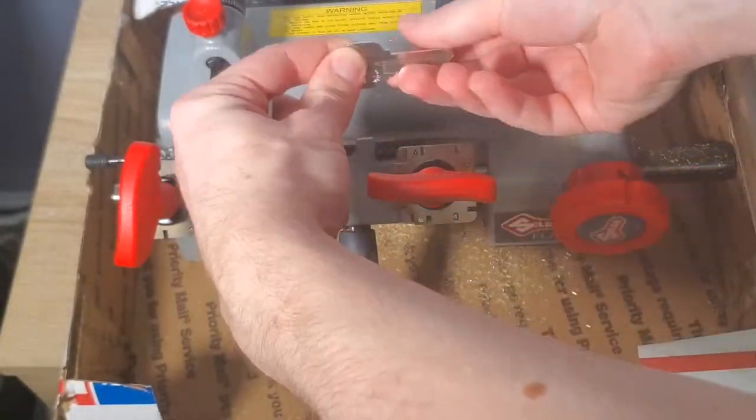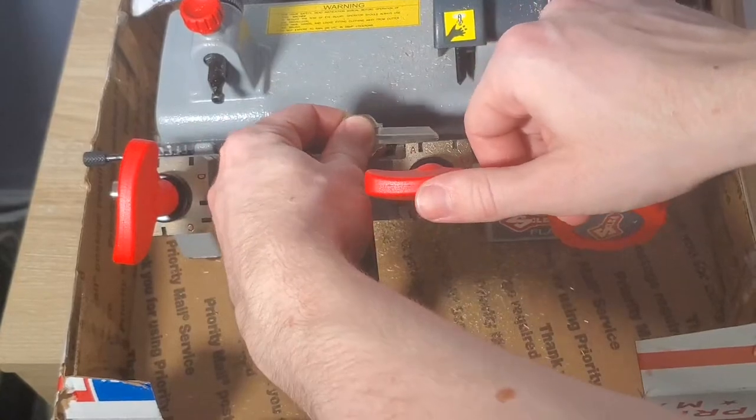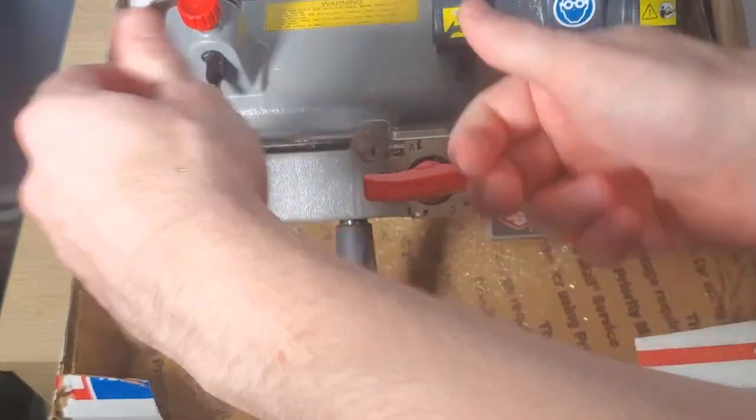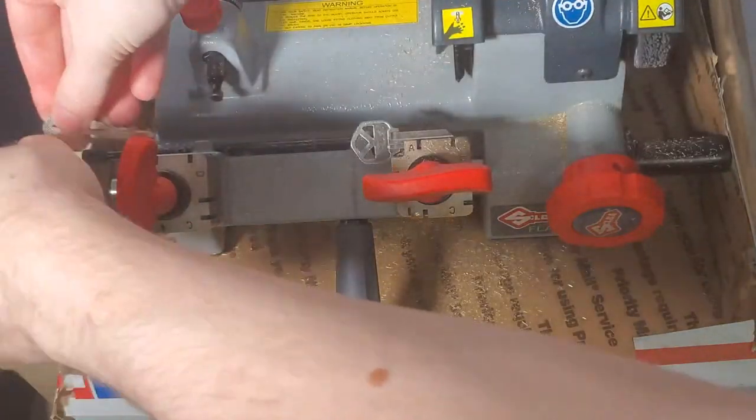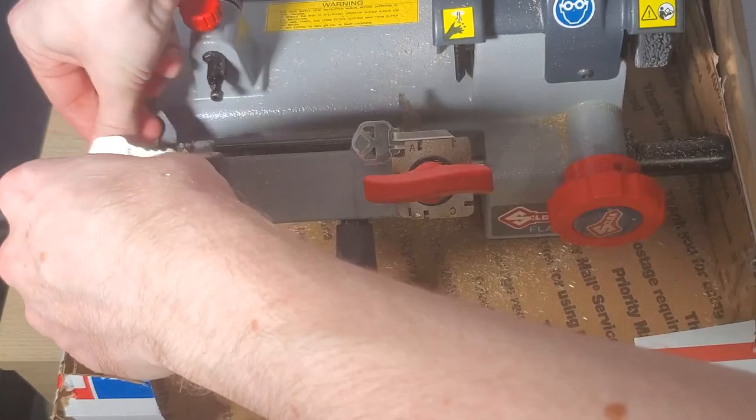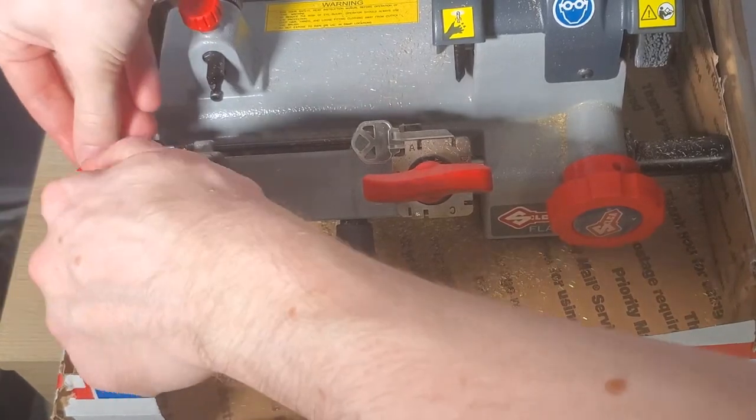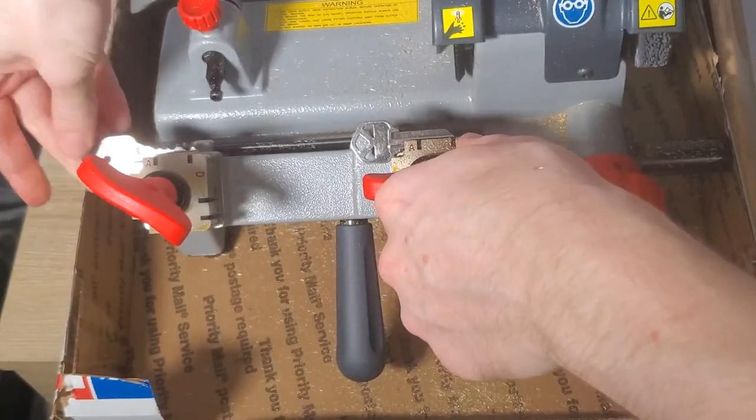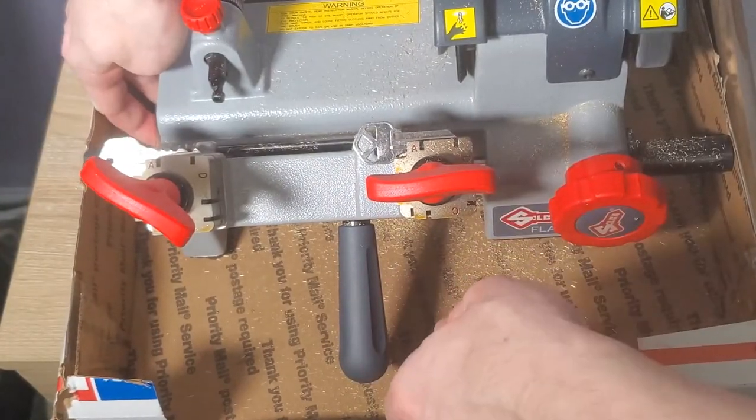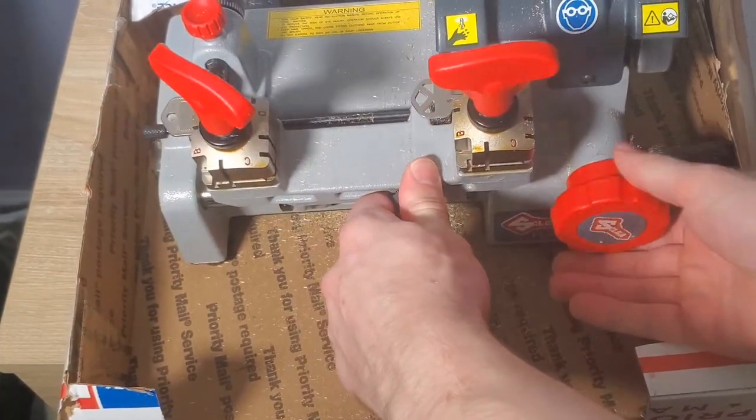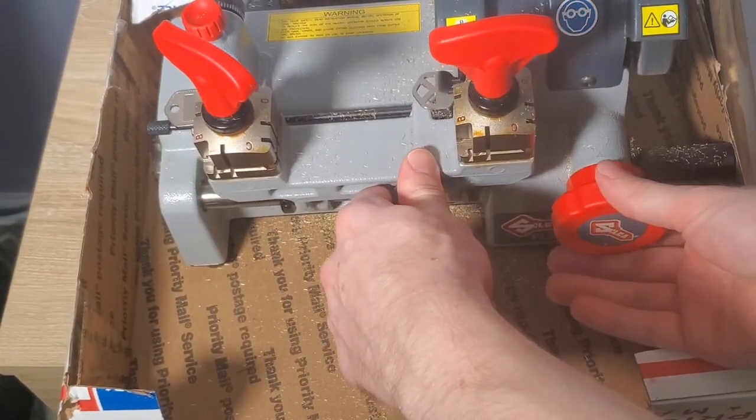As you can see this is a pretty small compact machine. It doesn't take up too much room. I haven't got a formal setup as you can see in this cardboard box. But this machine is very quick to set up. On these quick set keys they have a stopper on the back, so I didn't necessarily need to use the gauge to line it up.